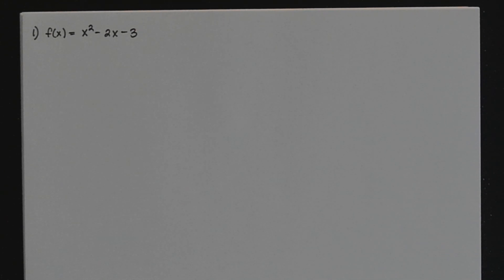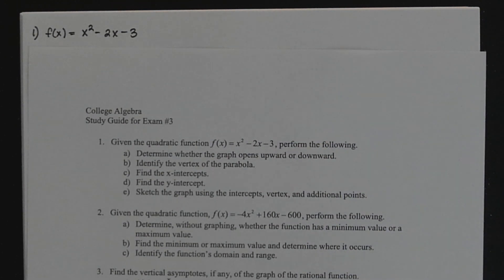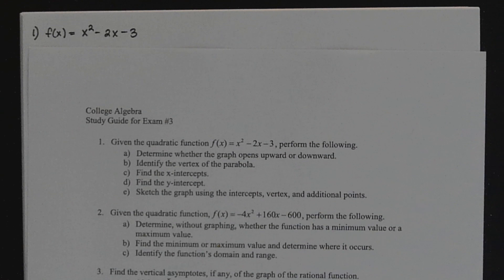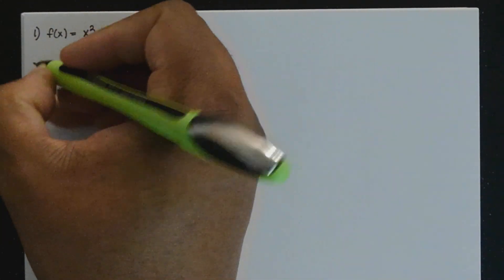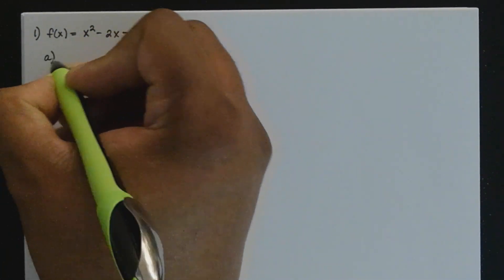Here you're given f of x is equal to 2x minus 3, and the instructions will be laid out like this. In part A, you're going to determine whether the graph opens upward or downward, and then identify the vertex of the parabola, find the x-intercepts, then find the y-intercepts, and then sketch the graph using the intercepts, vertex, and additional points. So let's start with part A: determining whether the parabola opens upward or downward.